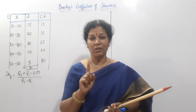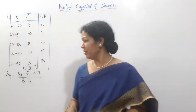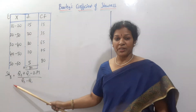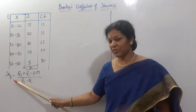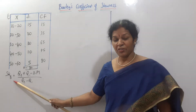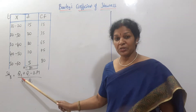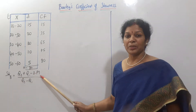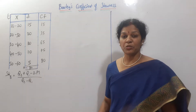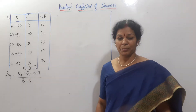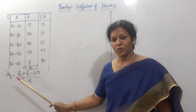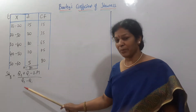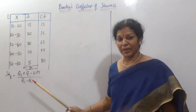We have already explained the formula. SKB — skewness of Bowley's — the formula is: Q3 plus Q1 minus 2M, divided by Q3 minus Q1.